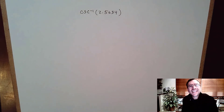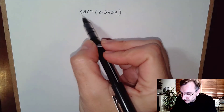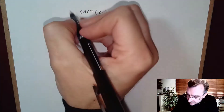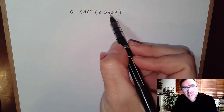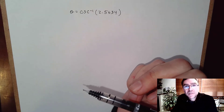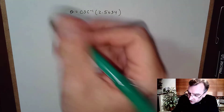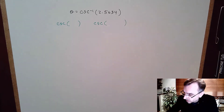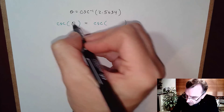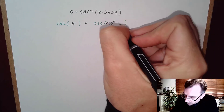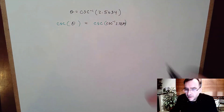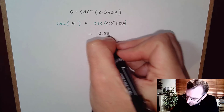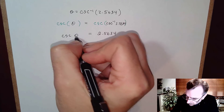Now let's talk about finding the inverse of the reciprocal trig functions. For example: cosecant inverse of 2.5634. Let's set theta equal to cosecant inverse of 2.5634 — that returns an angle in degrees. Applying cosecant to both sides, we get cosecant of theta equals cosecant of cosecant inverse of 2.5634. The function and its inverse cancel, leaving cosecant of theta equals 2.5634.